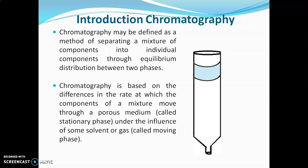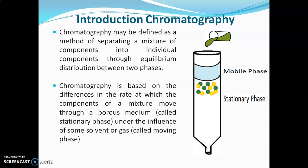The stationary phase, which is porous in nature, is packed in a column, and the mobile phase is allowed to move through it. The mobile phase along with sample molecules will move down through the column. Some sample molecules travel fast and some travel slowly through the pores of the stationary phase. Due to this difference in movement of sample molecules, separation will occur.